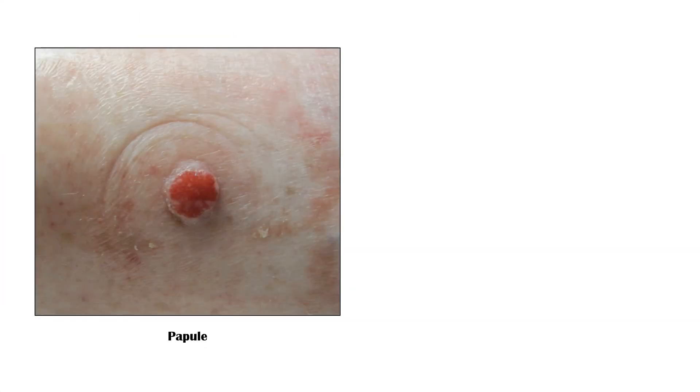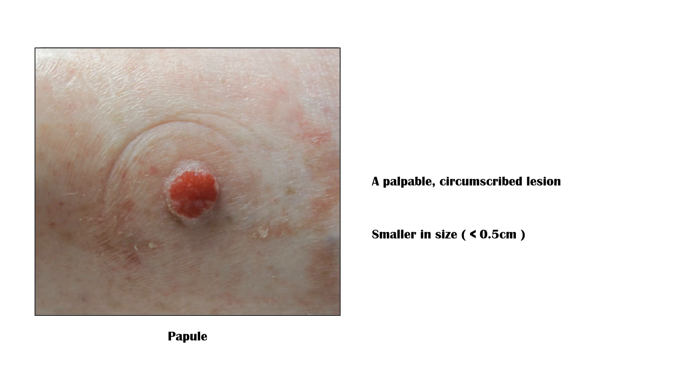A papule is also a circumscribed lesion, but it is palpable. They are smaller in size, typically less than 0.5 cm in diameter.